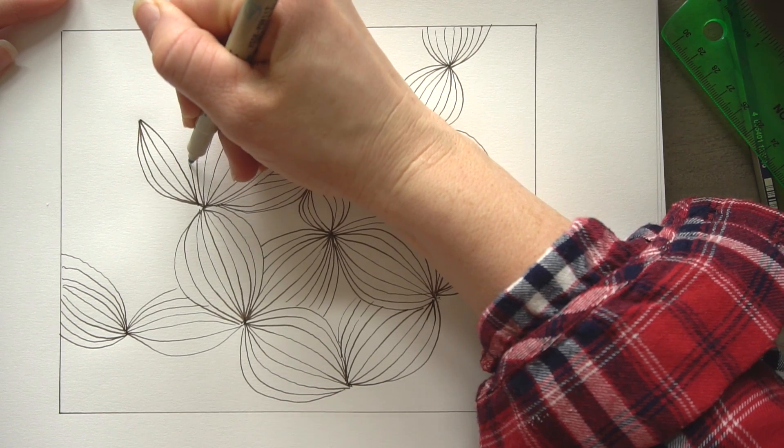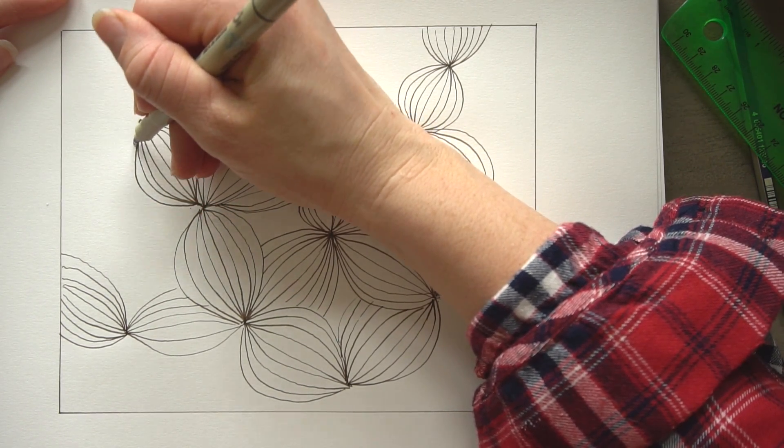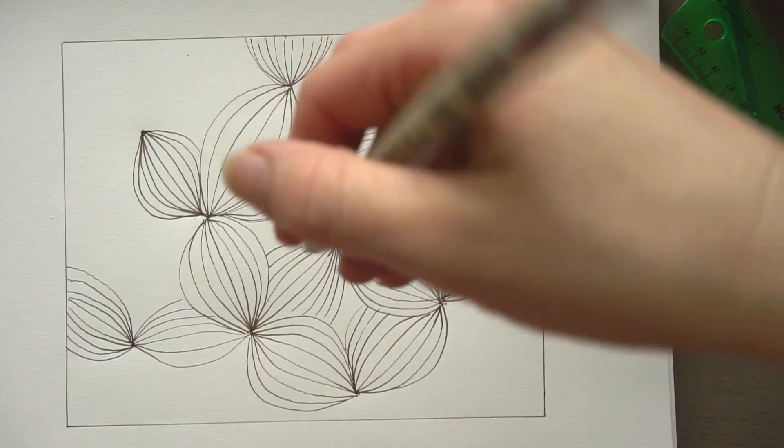So again, I'm just pressing a little bit harder near those dots and then pulling away as I get to the center of that line. And you just choose where you want to overlap it.